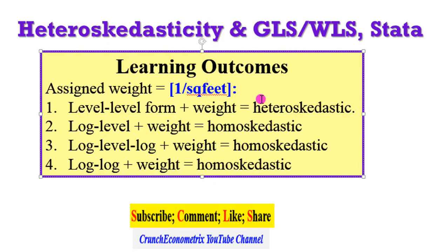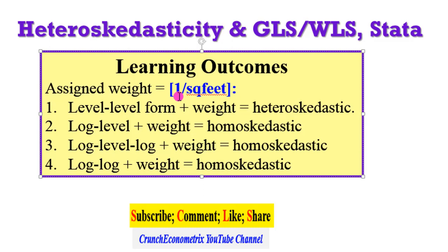So these are the learning outcomes. The assigned weights is 1 over square feet. And this is what we observed. When we use a level-level form of the model with the attached weight, the model is still heteroskedastic. But when we change the functional forms using the log level, we have homoskedastic models. So with the log level and weight, it's homoskedastic. With the log level log model with the weight, it's homoskedastic. And with the log-log formation and the weight, the model is homoskedastic. So this tells you that level-level models are prone to being heteroskedastic.